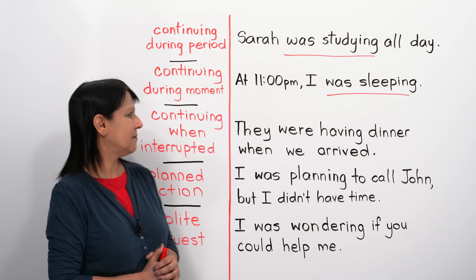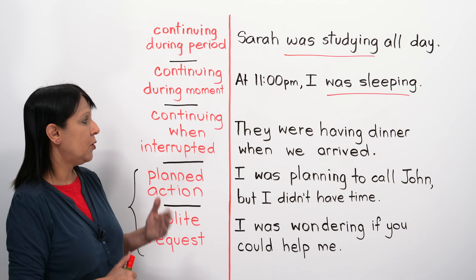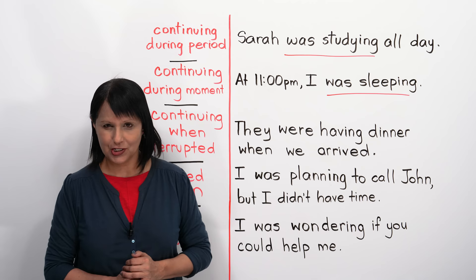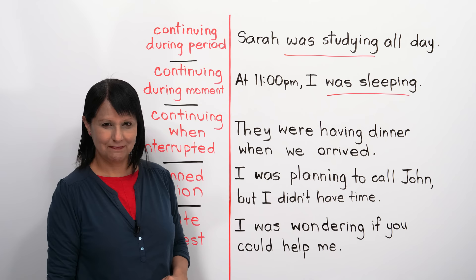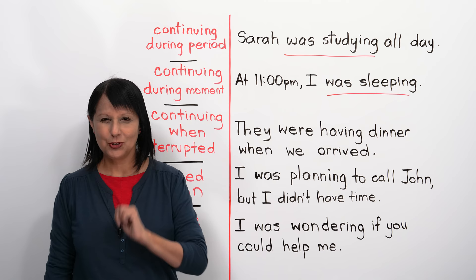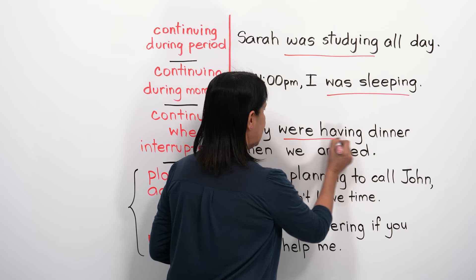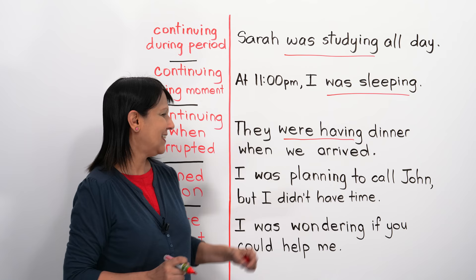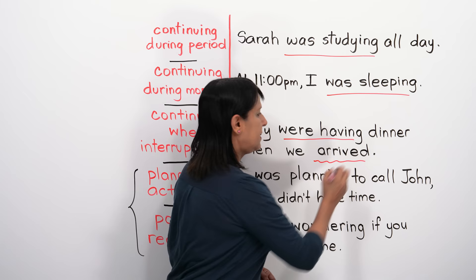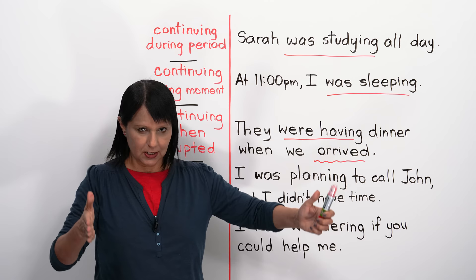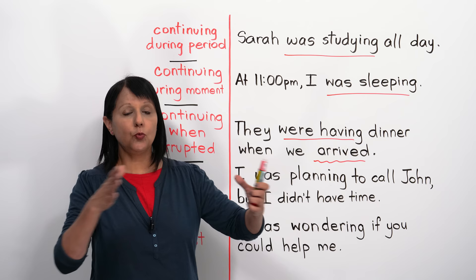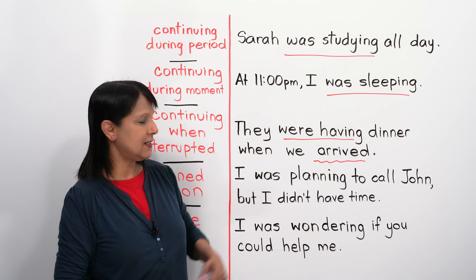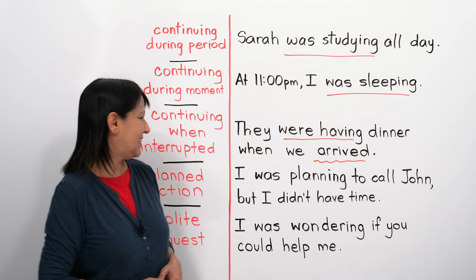We can also use the past continuous to talk about an action that was continuing when it was interrupted by another action. For example: 'They were having dinner when we arrived.' This sentence has two past tenses — the past continuous 'were having' (the continuing action) and the past simple 'arrived' (the interrupting action). We use the past continuous to show what was going on at that time.